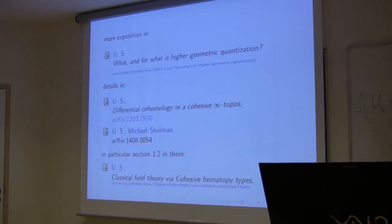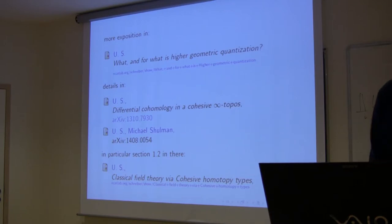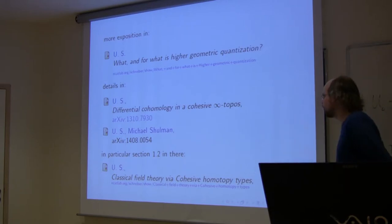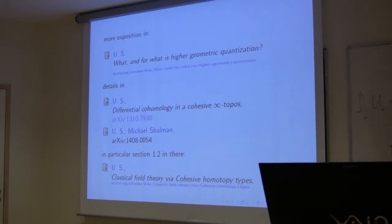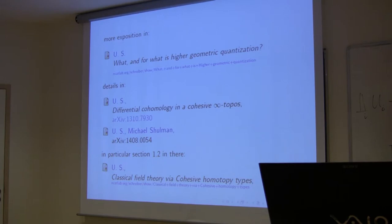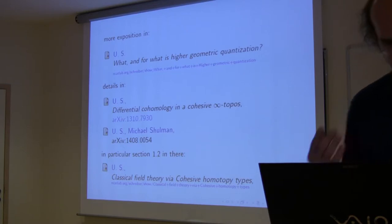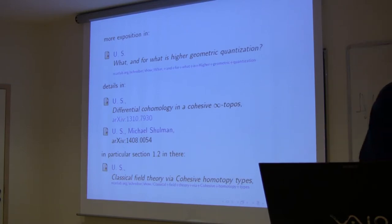I'll close by pointing you to some references that go into full detail. There's a lecture note review of what and what-for is higher geometric quantization. There's the full details in a book I wrote. There's an article with Mike Shulman where Mike shows how to fully formalize cohesion in Coq. In particular, in that book there's a section that walks in full detail through how to do all of classical field theory in terms of this cohesive axiomatics. That's it, thanks.